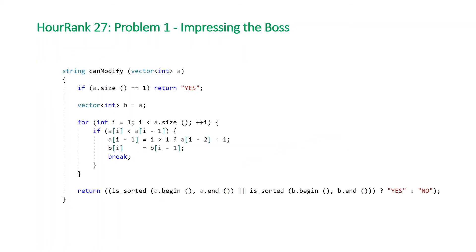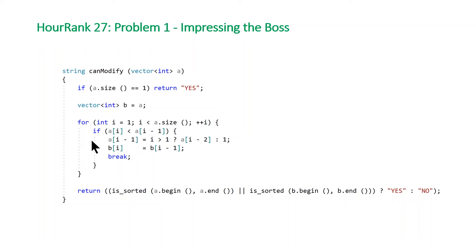Here's the code. The function canModify takes a vector of integers as a parameter and returns a string — either 'yes' or 'no.' At the top, we check if the size of array A equals one; if so, return 'yes' since a single element is trivially sorted. Then we make a copy of array A called B so we have two arrays to operate on. We loop starting at index 1 to the end, and for each element, if the current element is less than the previous element, we've violated the sorted condition.